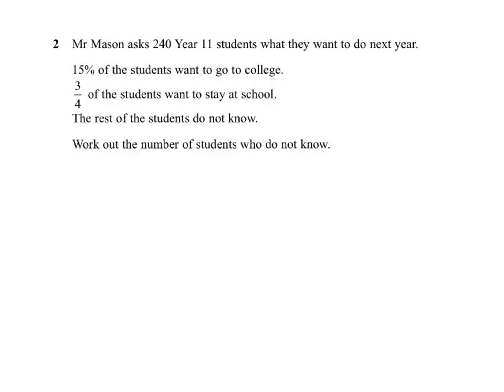The technique here is to work out how many students want to go to college, how many want to stay at school, add them together, take away from 240, and you'll find the number who don't know.